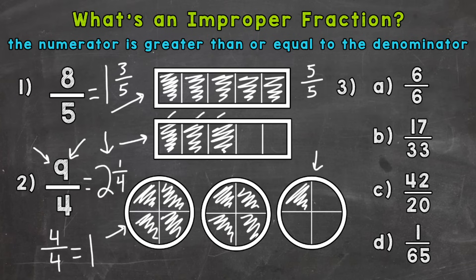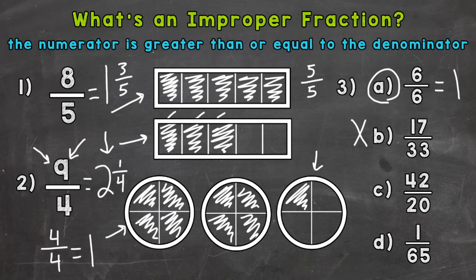So let's move on to number 3, where we have 4 choices — A, B, C, and D — and we need to pick out which ones are improper. Starting with A, we have 6 sixths. Our numerator, the top number, is the exact same as the denominator, therefore this fraction equals 1 whole. Since our numerator is equal to the denominator, we have an improper fraction. Choice B, we have 17 over 33, so the numerator is less than the denominator — that's what we call a proper fraction, so this is not improper. Choice C, our numerator 42 is greater than our denominator of 20, so we have an improper fraction there. And lastly, D, we have 1 over 65, so the numerator is less than the denominator — choice D is proper, therefore not improper.